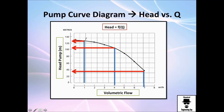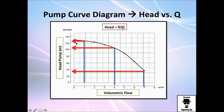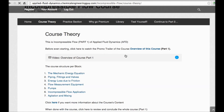Recall that for every volumetric flow rate, we get only one pump head. Some students mistakenly think you can have two different heads for the same flow rate — this is impossible. One volumetric flow rate gives exactly one pump head. Keep that in mind as we continue with the pump diagram construction.